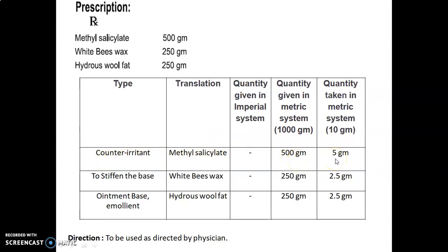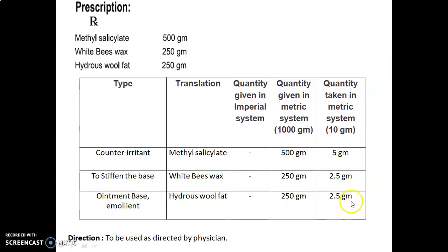White beeswax is used to stiffen the base; quantity given is 250 g and taken quantity is 2.5 g. Hydrosol fat is used as an ointment base and emollient; quantity given is 250 g and taken quantity is 2.5 g. Direction: to be used as directed by physician.